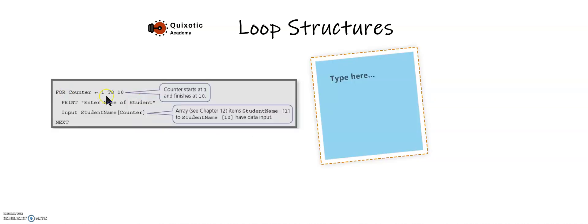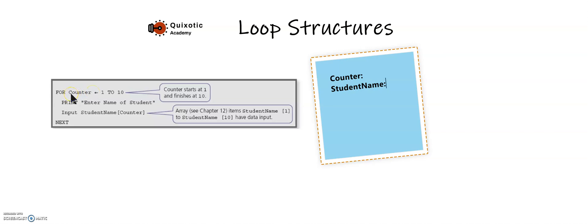Here I have an example of a for loop. We have a variable named counter and another variable named student name — two variables which are going to be used in this loop. As you can see, the for loop is using the counter and the counter is not being changed anywhere else. Whichever variable you use for counting the number of iterations should not be changed anywhere else to be on the safe side, otherwise your program will produce a bug.